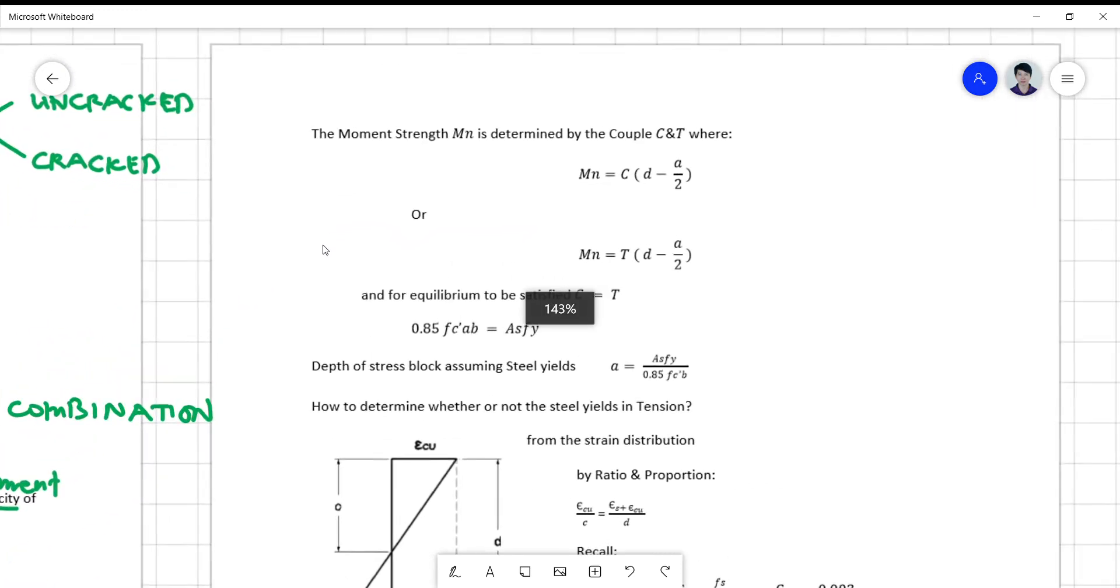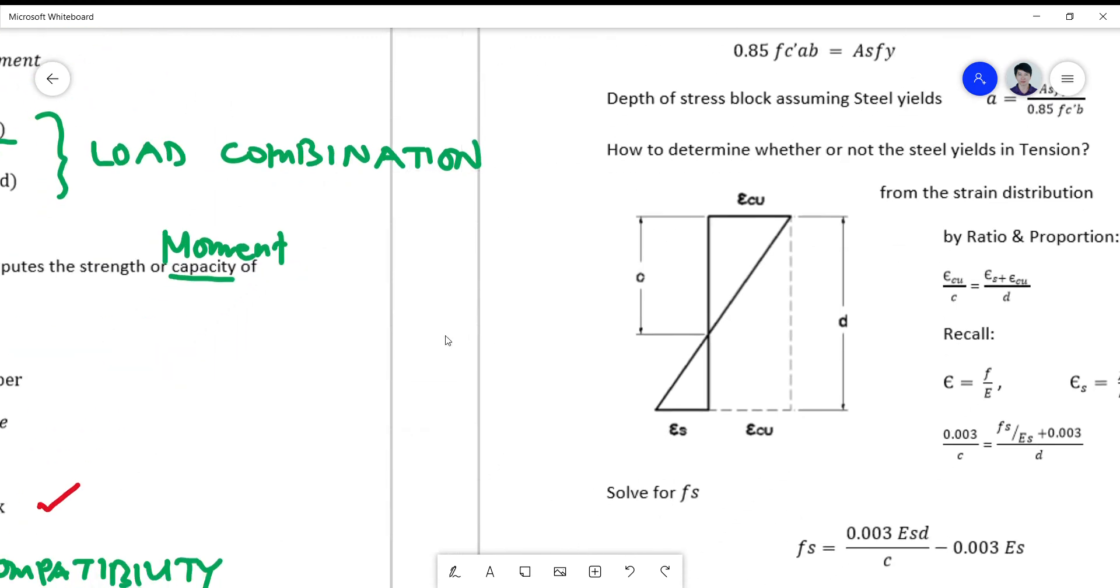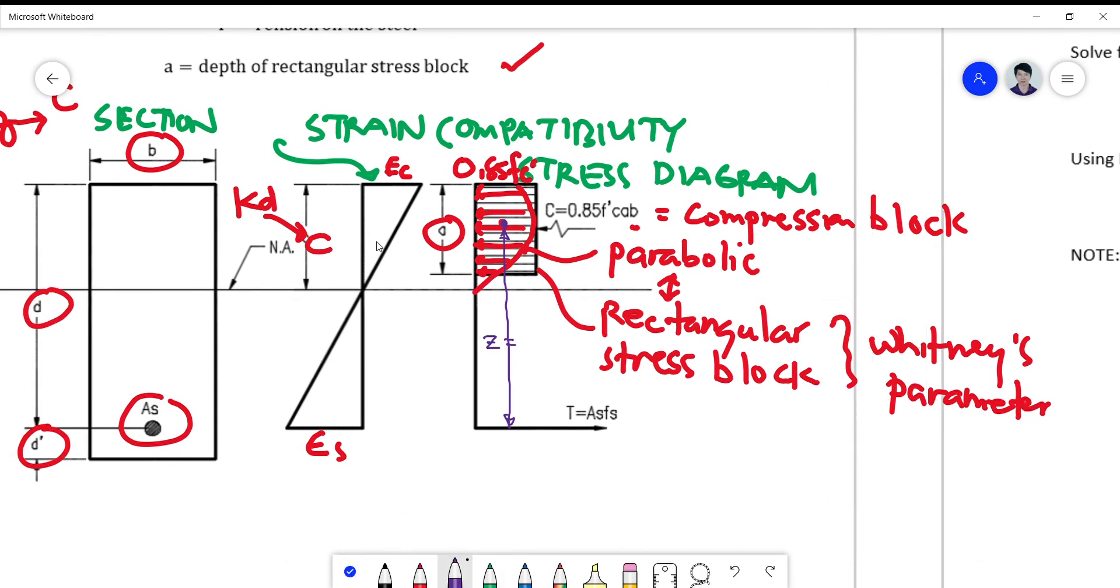To derive the moment strength Mn, the moment strength is simply a couple. It's given by a couple C and T multiplied by the moment arm. So we notice that the moment arm here is located from the centroid of the block up to the location of steel. So this is now your moment arm z, which is equivalent to your total depth. The depth is d, so this is simply equal to the depth minus one half of a. So this a over two, so this is after your jd in your elastic.